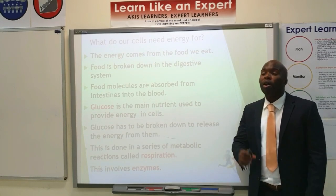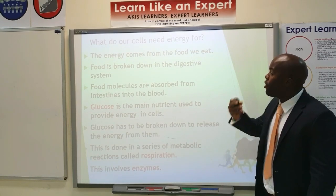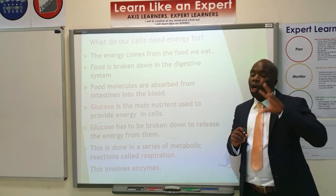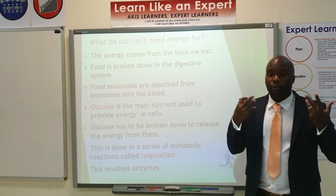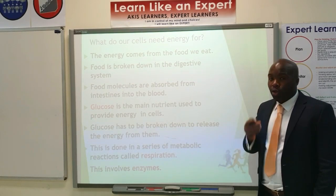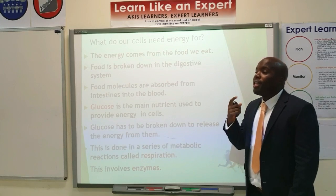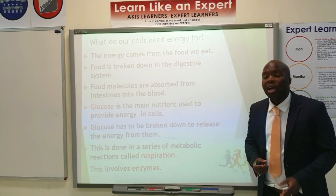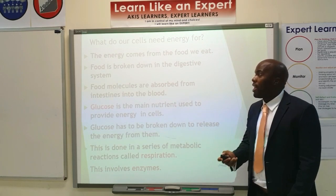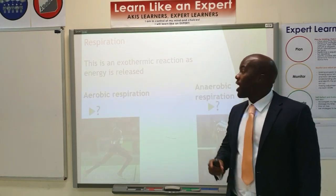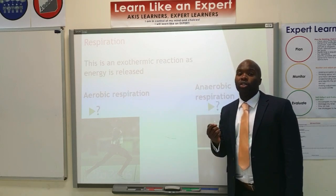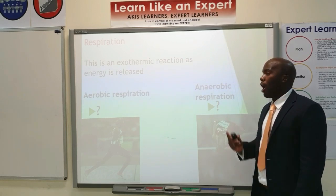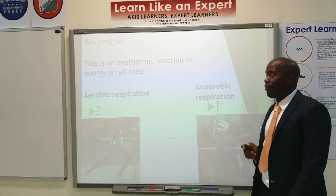This energy comes from the food that we eat. Food is broken down in the digestive system — go back to your previous notes to refresh your memory on that — and we get glucose. Glucose is the main nutrient that allows us to produce energy. This glucose is broken down in respiration, which uses enzymes. Respiration is an exothermic reaction as it releases heat. The two types are aerobic respiration and anaerobic respiration.